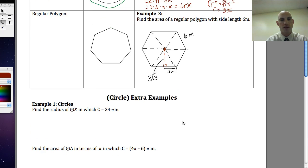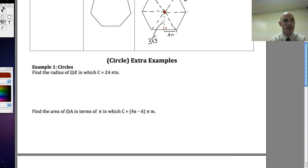I have a couple of extra examples down here if you want to write those down. Example 1, I'm going to be finding the radius once again. Find the radius of circle X in which the circumference equals 24 pi inches. If I'm finding the radius, I know I'm going to associate some things. And I want to find the area of circle A, in terms of pi, in which c equals 4x minus 6 pi meters. That's all I got for this part of the video. Thanks for watching guys. We'll see you next time.